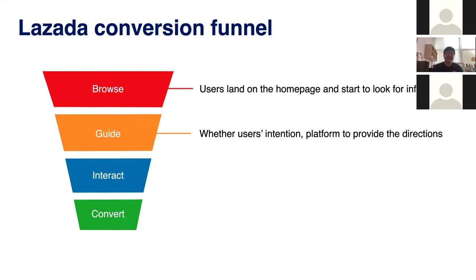The second funnel stage is guide. When users start to browse, we have to identify their intentions so the platform can provide directions for them to go. The first two types of users cannot be satisfied with the merchandise or deals unless they are guided to explore alternatives. For example, if they want to buy Adidas shoes but couldn't find the preferred color or model, the platform or store should provide alternatives so they wouldn't get lost or leave.